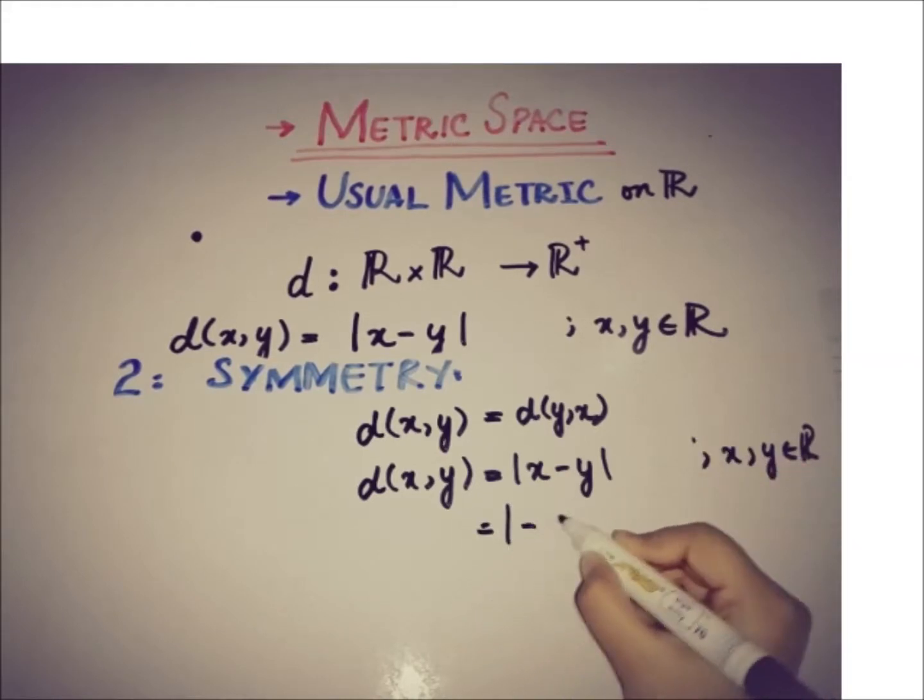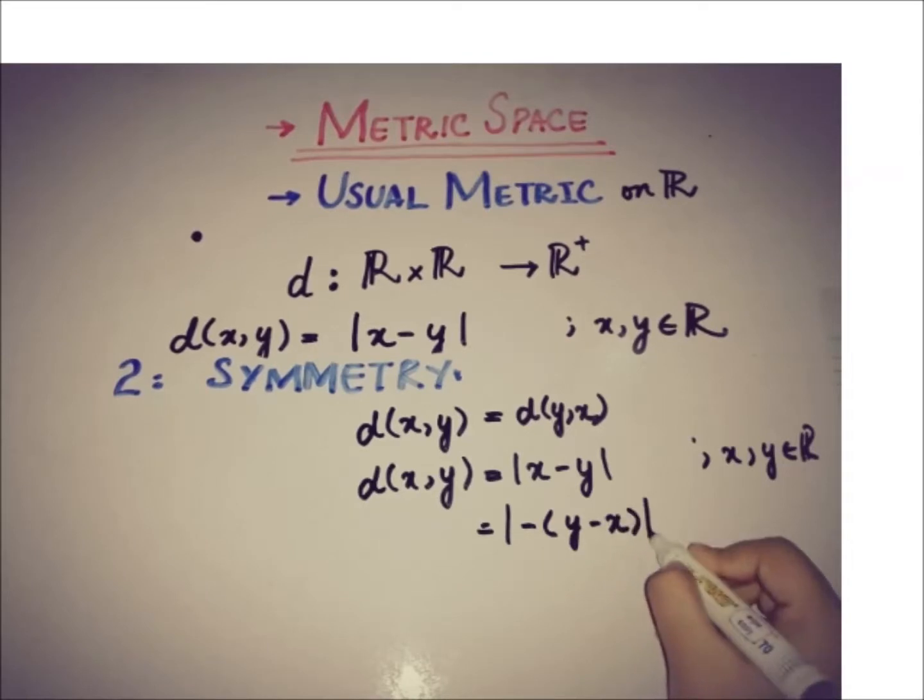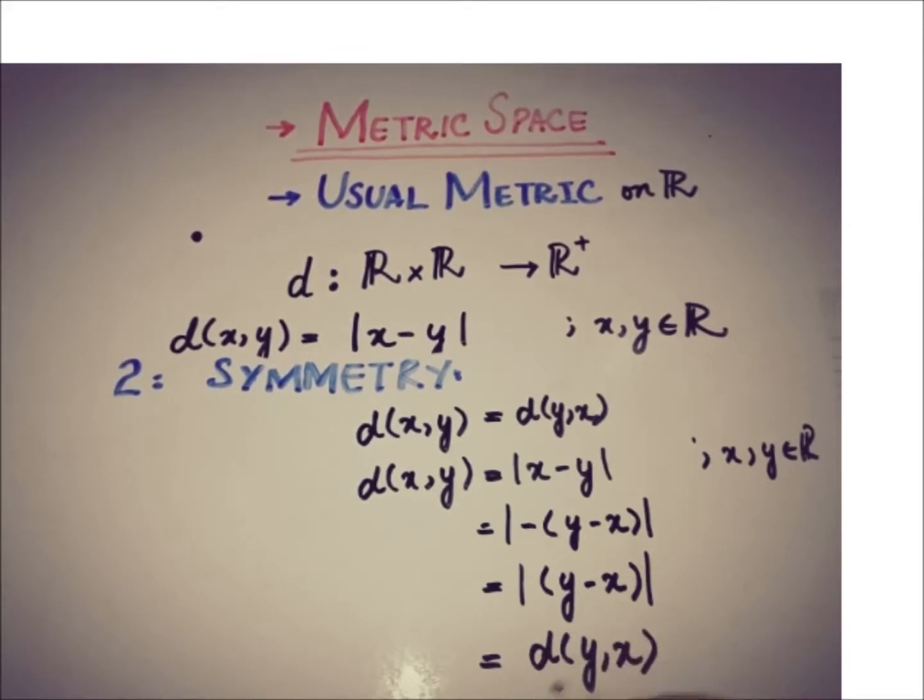So if we take negative common from this we can get y minus x and the absolute value of negative is the absolute value of that value. So we'll get absolute value of y minus x and that is equal to d(y,x). So this implies that d(x,y) is equal to d(y,x) and symmetry holds in this function d here.